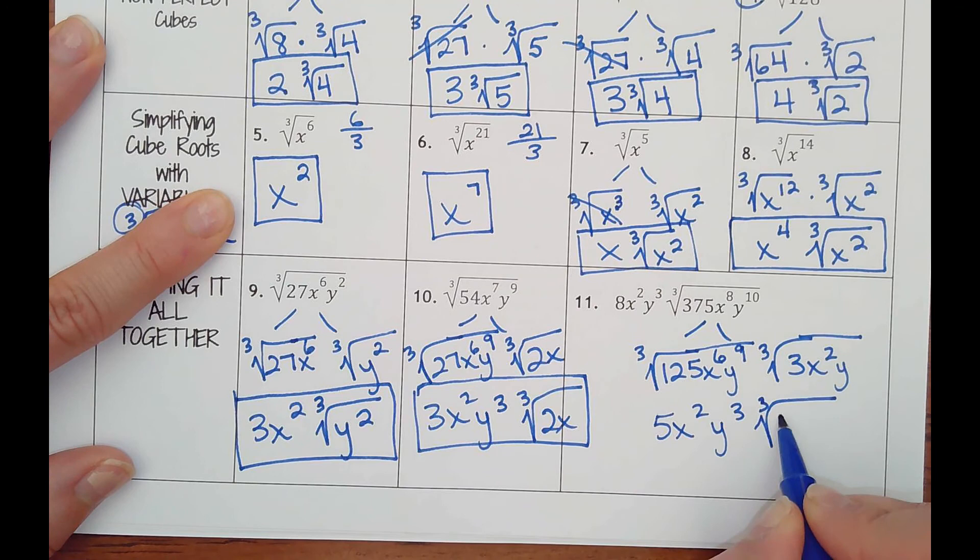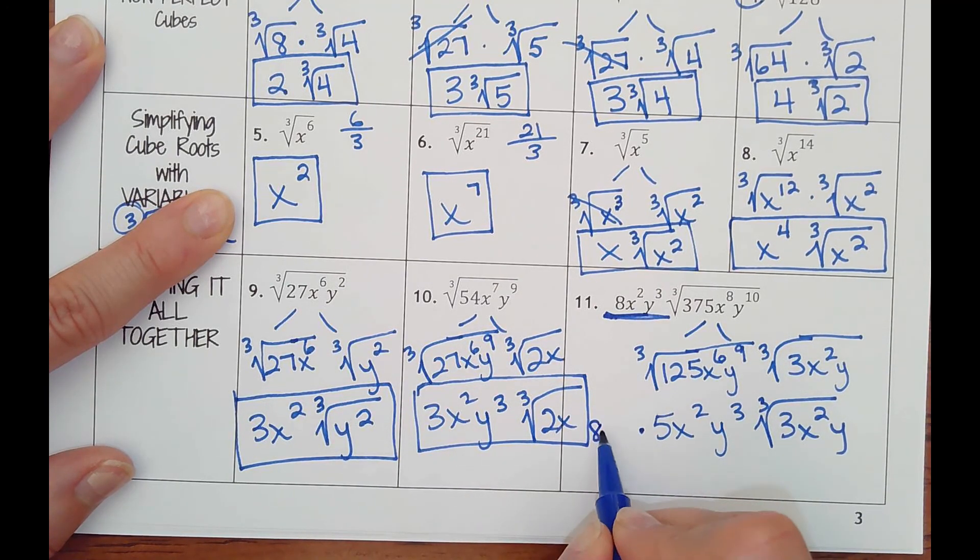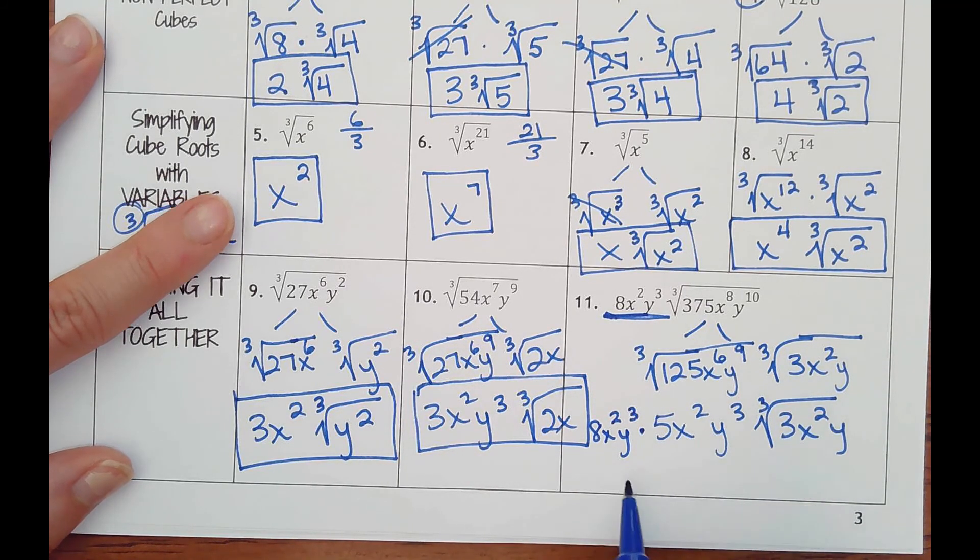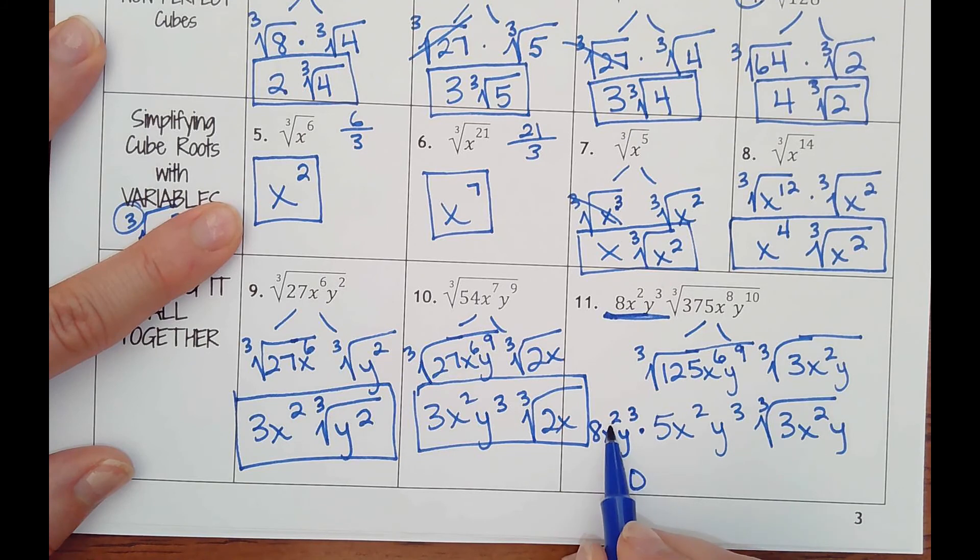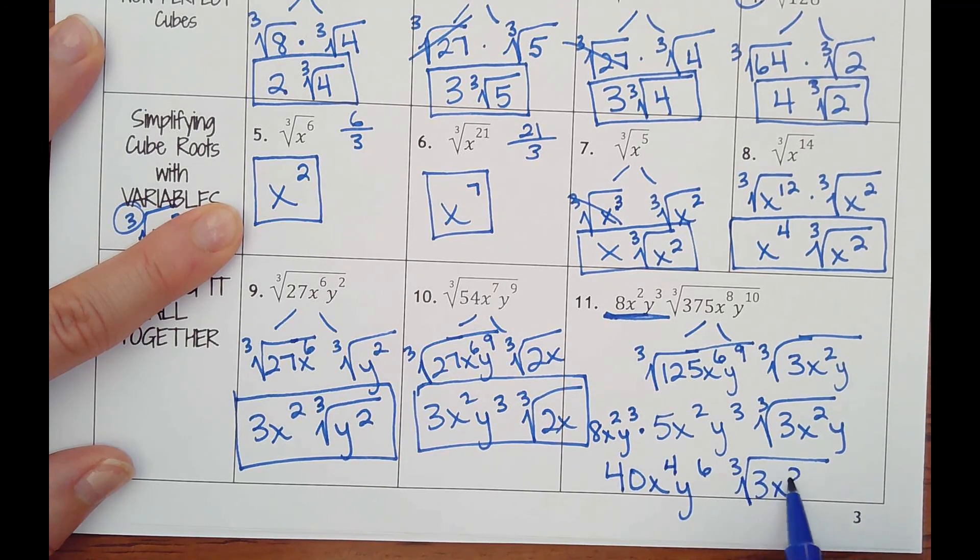Cube root of 125 is 5. 6 divided by 3 is 2. 9 divided by 3 is 3. Times the cube root of 3x squared y. And then don't forget about times 8x squared y cubed, which would become 8 times 5, 40. 2 plus 2, x to the fourth. 3 plus 3, y to the sixth. Times cube root of 3x squared y.